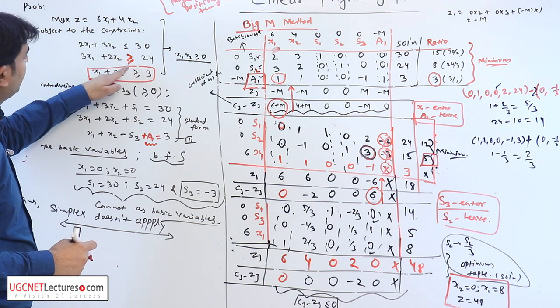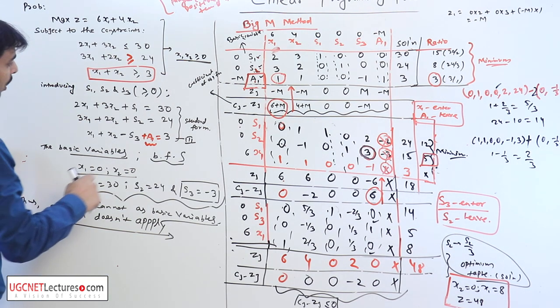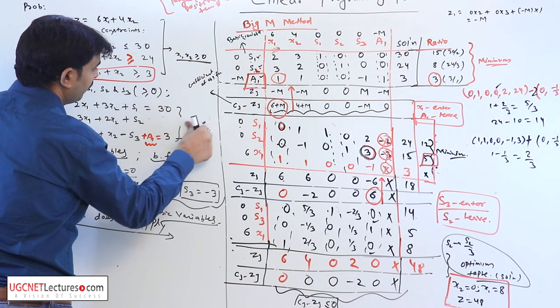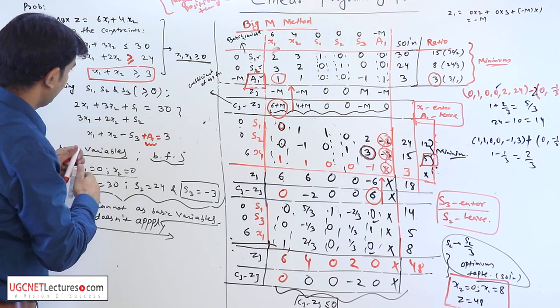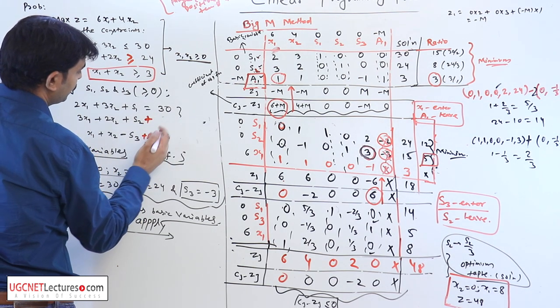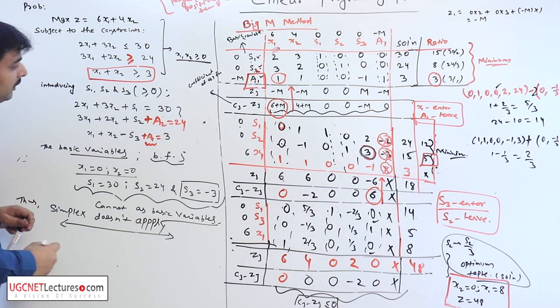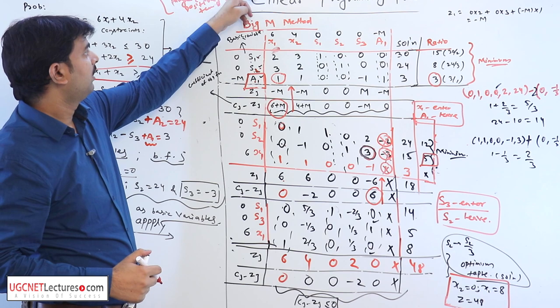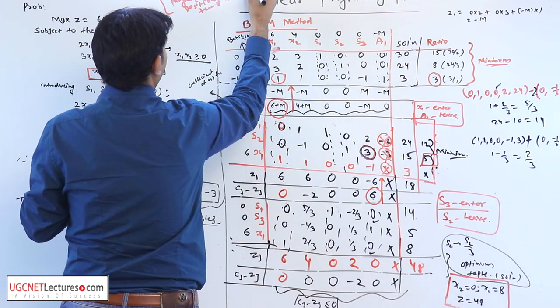If the greater than or equal to sign is written in the two equations, so for solving big M, we have to add an additional constant a2. Similarly here, the maximization of z is now equal to again minus M a2.